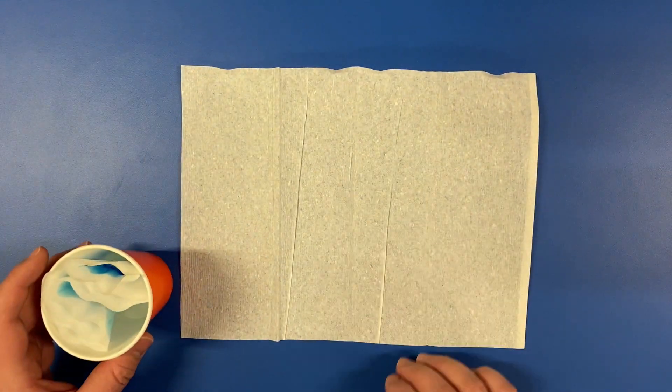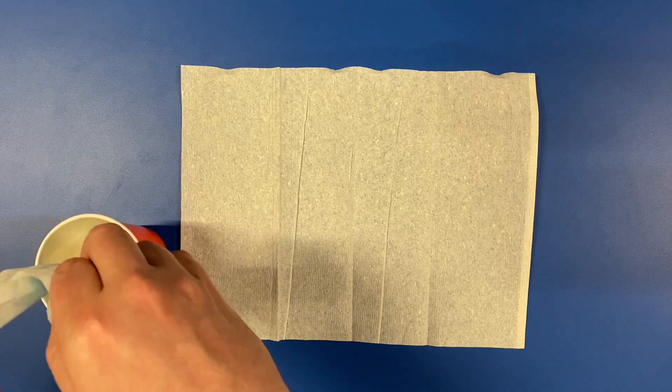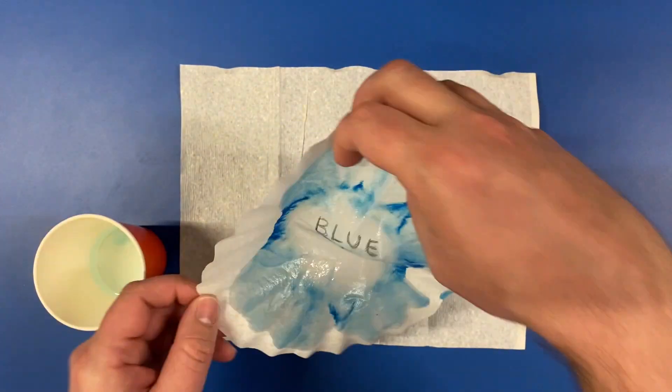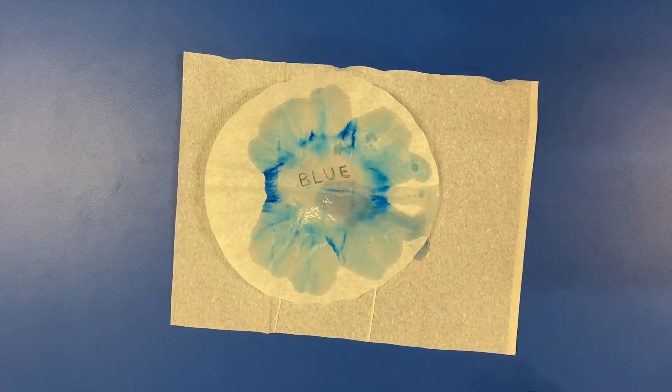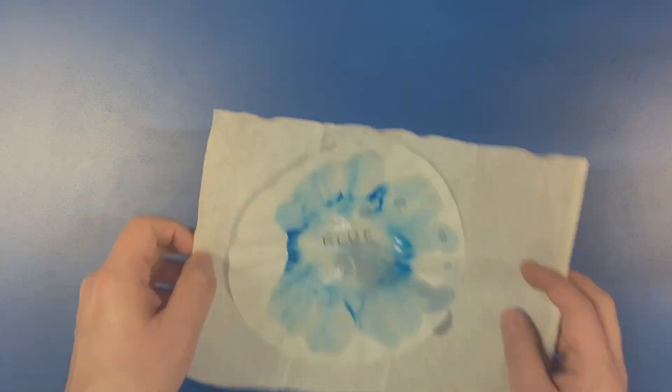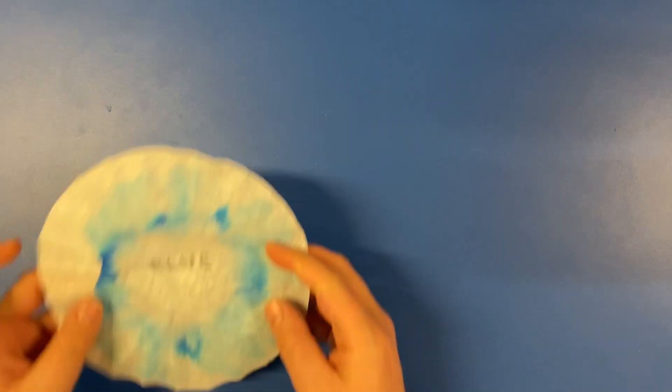Once it looks like the ink has stopped bleeding, take the filter out and place it on a paper towel to dry. Go ahead and do this with the remaining coffee filters and use a different color marker for each one.